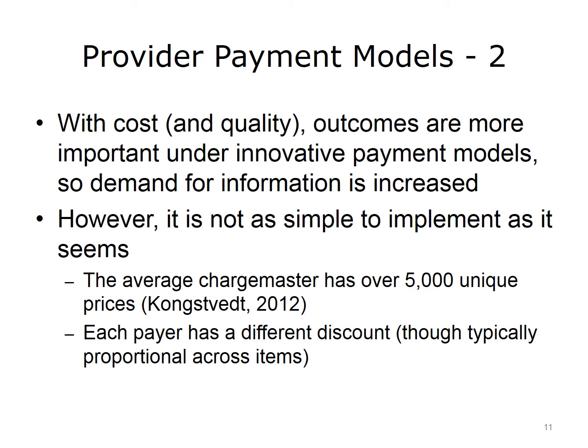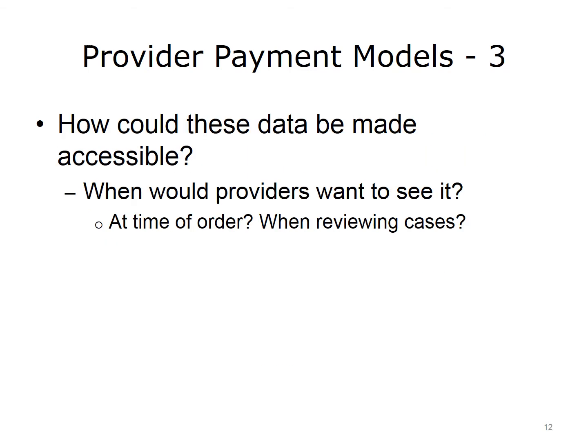With cost and quality outcomes more important under innovative payment models, demand for information is increased. However, it's not simple to implement. The average charge master, or list of prices charged at a hospital, has over 5,000 unique prices, and each payer has a different discount. The question remains of how to make data more accessible to providers and decision makers trying to reduce costs and improve care. Are costs important at time of ordering, or only when reviewing cases to see why they were expensive?